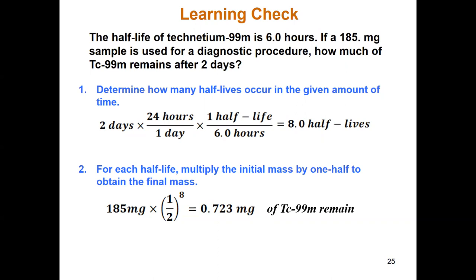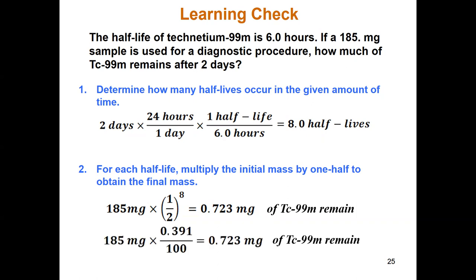That fraction 1/256 can also be written as 0.391 over 100, showing the percentage left after eight half-lives. This comes to the same answer: 0.723 milligrams of technetium-99-M remaining.